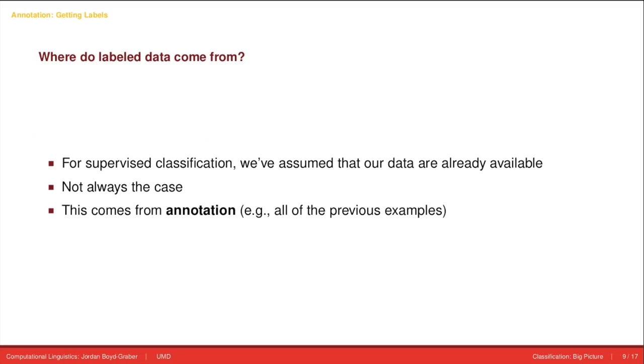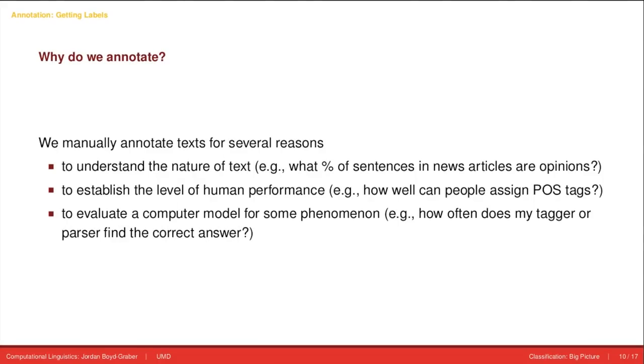For supervised classification, we've always assumed that our data are already available, but that isn't always the case. Often when you're out in the real world and you have a job, you need to make your own data. The process of making labeled data from unlabeled data is called annotation. All of the previous examples where we had classification examples and we need to apply a label are a form of annotation. So where do we get those annotations, and why do we do it?